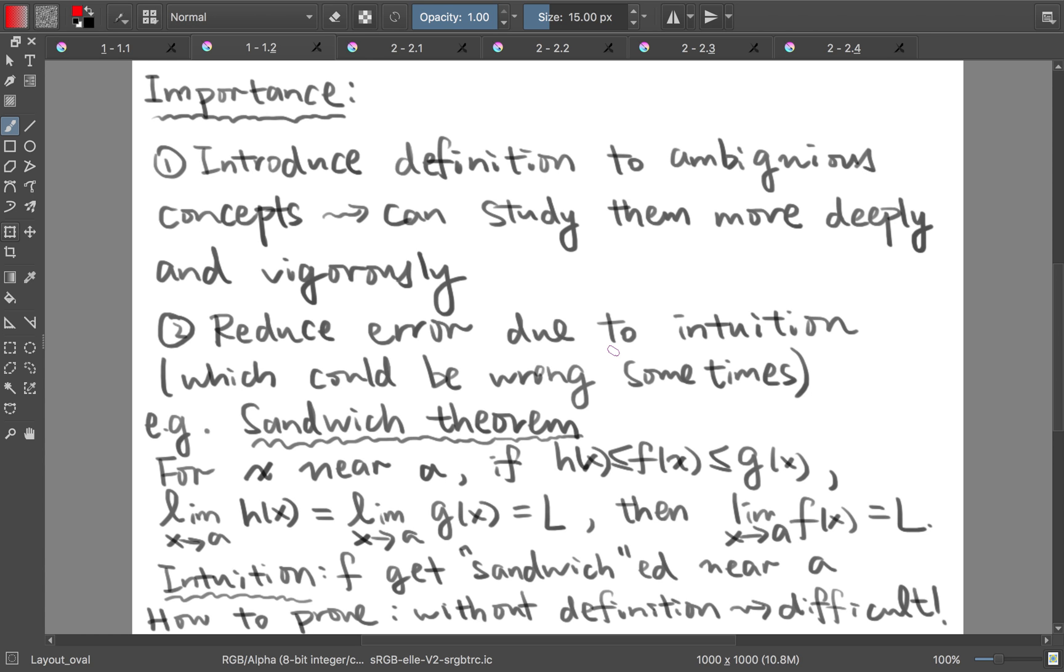Second, it can reduce errors due to intuition, which can be wrong sometimes. For example, when we talk about the sandwich theorem, we say that if for x near a, the function f(x) is bounded above by a function g(x) and bounded below by another function h(x), and the limit of h(x) as x tends to a and the limit of g(x) as x tends to a are equal to L.